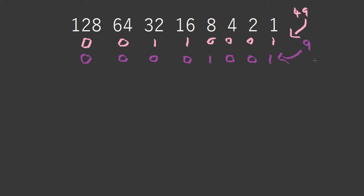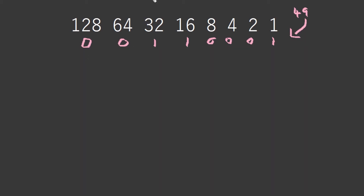Now we invert the second number, which is 9, and then add 1 to the second number. So basically we first convert it and then do the second step of the two's complement. So let's delete this, fill it in, and then invert it.